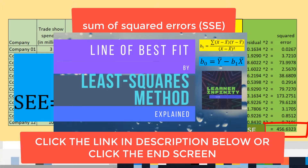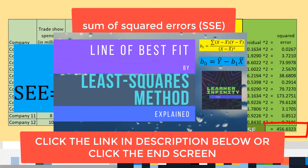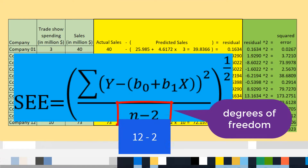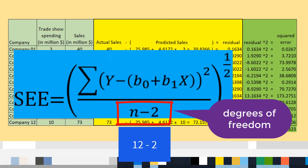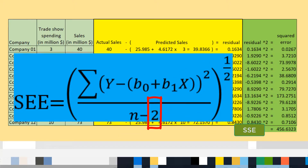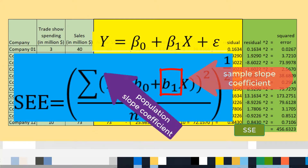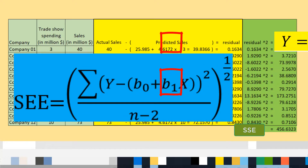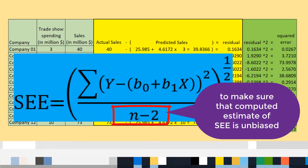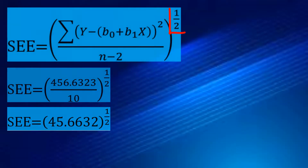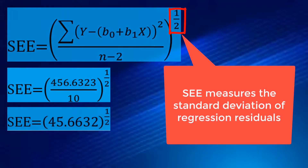SSE was also discussed in the video on line of best fit by least squares method explained — the link is in the description below or click the end screen after watching this video. The denominator is the degrees of freedom, which is n = 12 (the number of observations) minus 2. We use 2 because we have two estimated parameters: b₀, the sample intercept as estimate of β₀ the population intercept, and b₁ the sample slope coefficient as estimate of β₁ the population slope coefficient. The denominator n − 2 is needed to ensure that the computed SEE is unbiased.